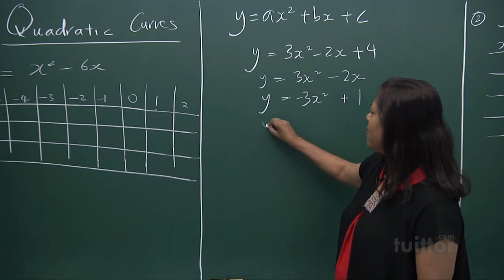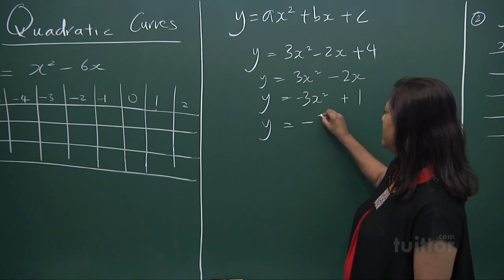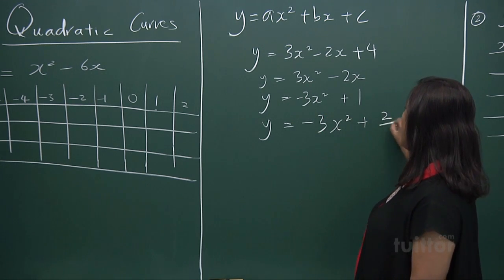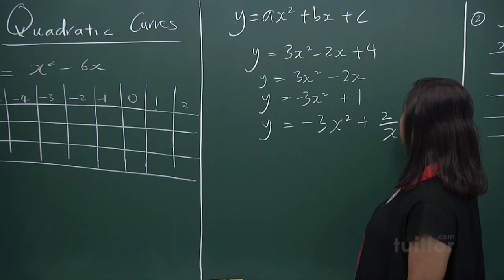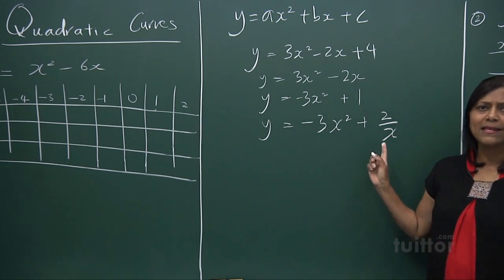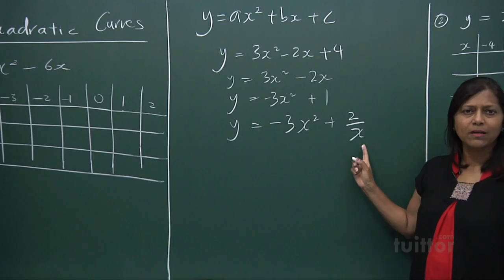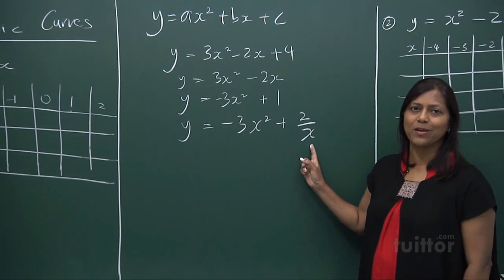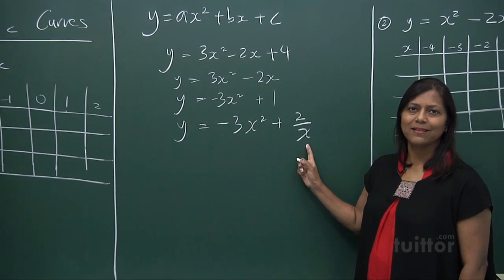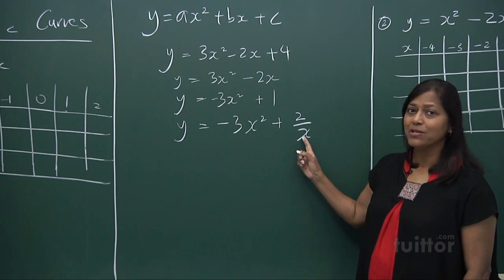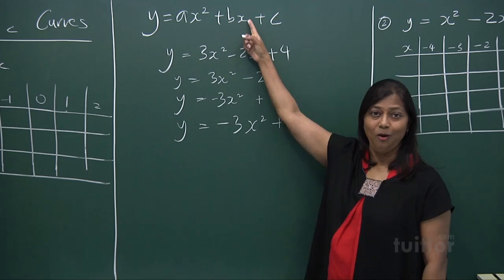Now, if y equals minus 3x squared plus 2 over x — if you look at it, the x is below. This makes it not quadratic. A quadratic equation takes the standard form; an x in the denominator disqualifies it.